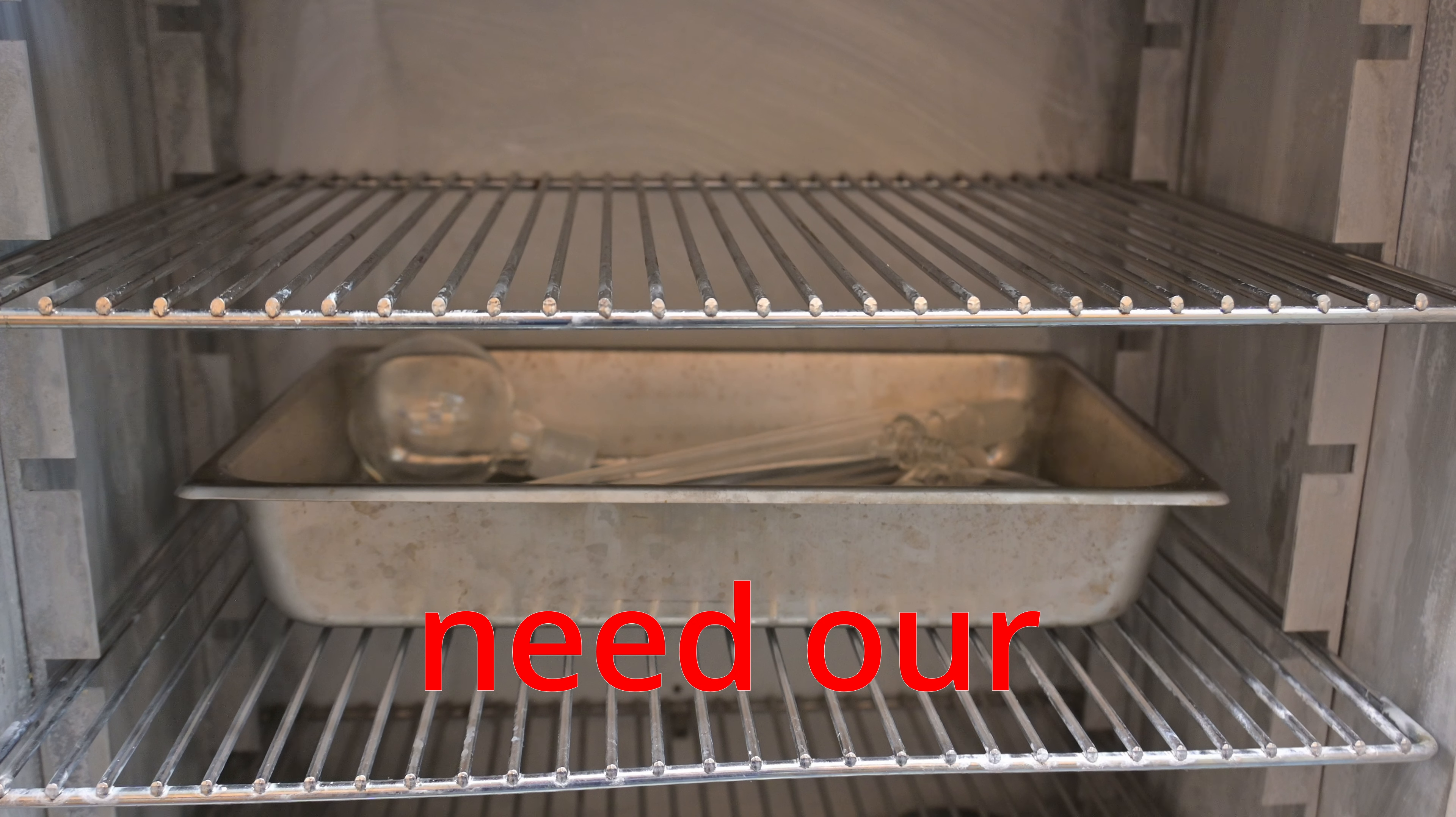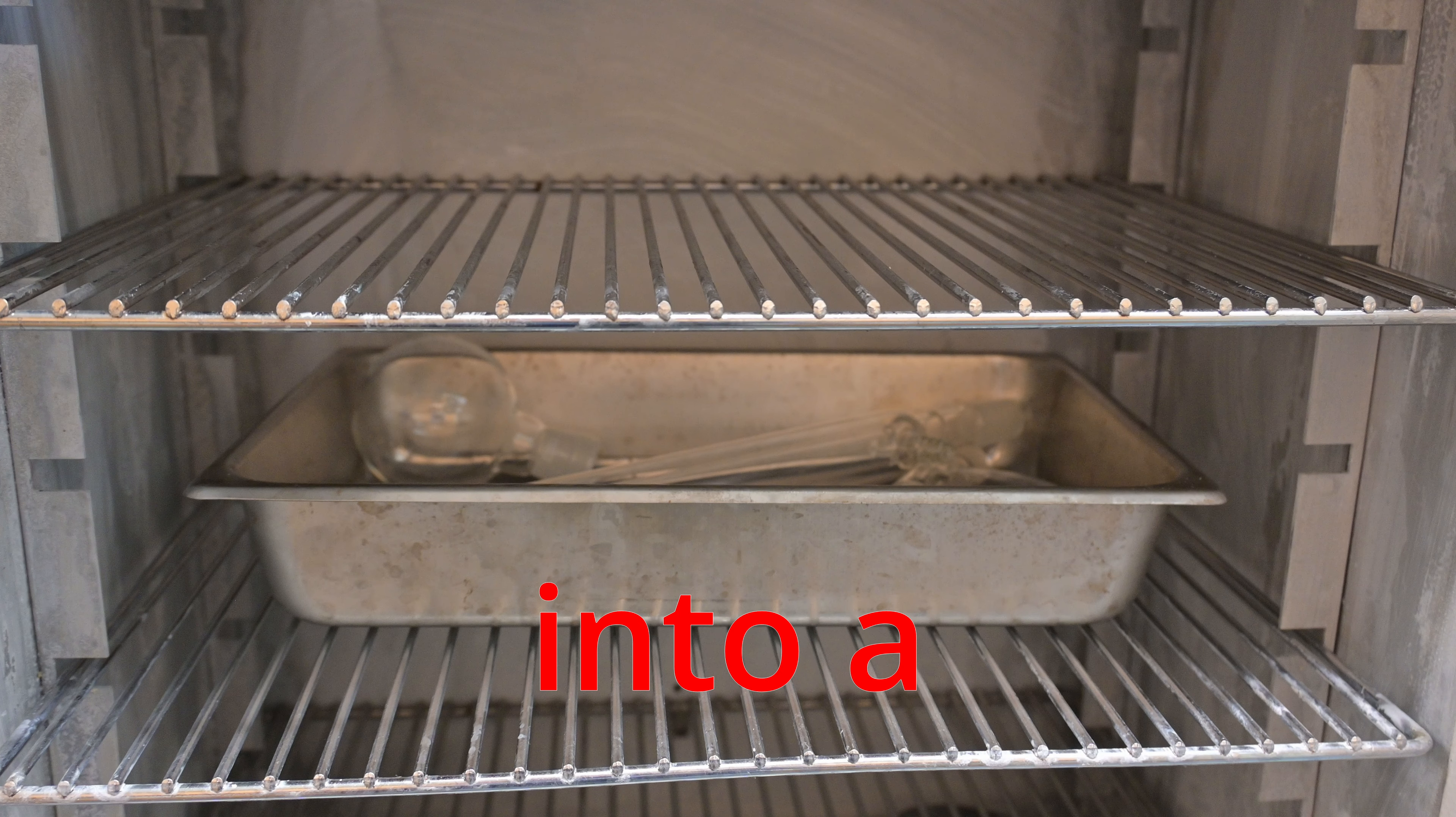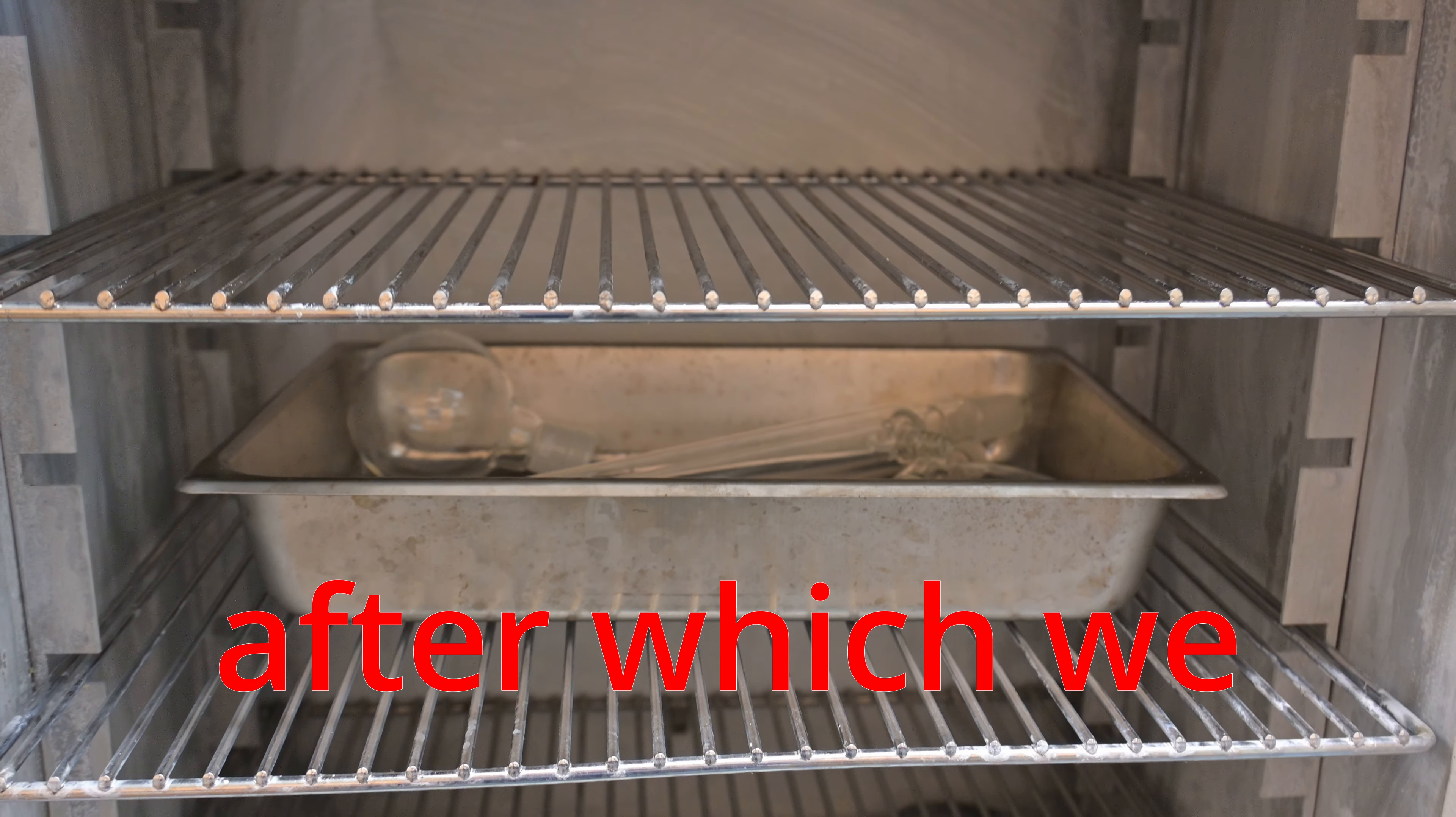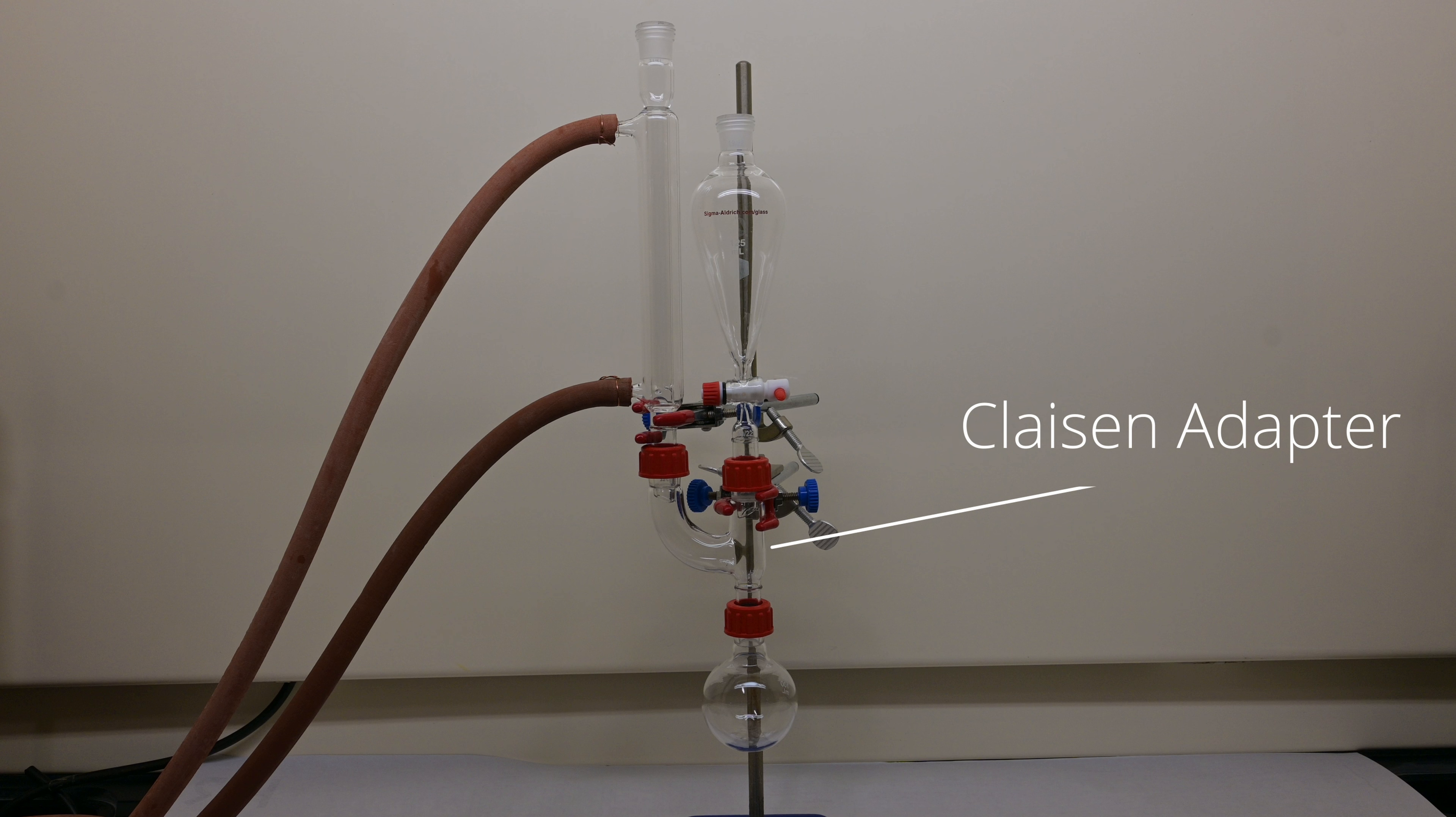To start, we need our glassware to be very dry, or any moisture will mess with our reaction. To accomplish this, we throw our clean glassware into a drying oven for about an hour above 100 degrees Celsius. After which, we take it out and allow it to cool to room temperature. We set up the glassware for addition under reflux by fitting a clean dry 100 milliliter round bottom flask with a Claisen adapter, placing a separatory funnel on its straight arm, and attaching a reflux condenser to its bent arm.